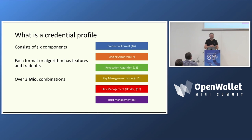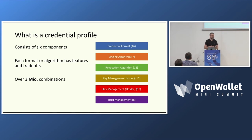What we realized is that this space is multidimensional. We have representations like CBOR and JSON, and we have different signature algorithms. Sometimes there is a relationship — for example, for AnonCreds there are only CL signatures, while for JWTs you can use nearly any kind of signature available, even HMAC. And credentials have a lifecycle, so you need a way to manage that lifecycle, which is called revocation.